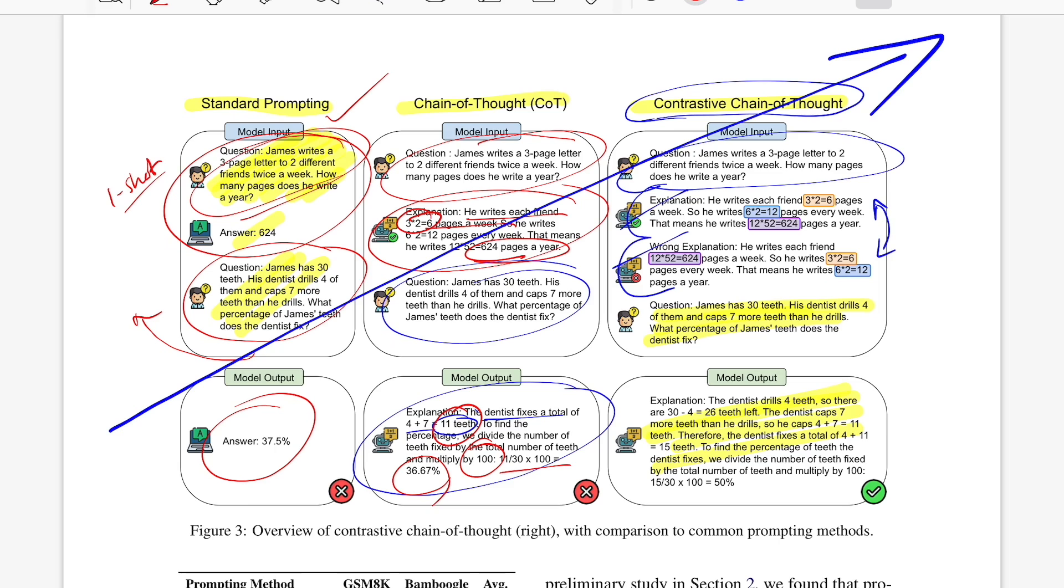Now a natural question comes in: what are these wrong explanations? Is there variety in terms of what kind of wrong explanations we can give? For positive examples it's pretty clear - whatever gets to the answer logically and makes sense is a positive example. But you can derive negative examples in multiple fashions. You can have wrong numbers put in place, you can change the order in which you're doing the calculation, you can not even talk about the problem you're trying to solve and talk about something totally different. All these are varieties of negative explanations that you can give to your model. What's the impact of each of them? All those questions are what these authors analyzed in this paper.